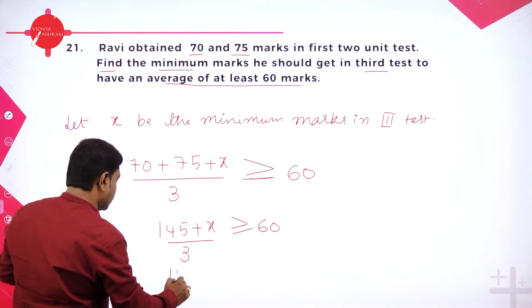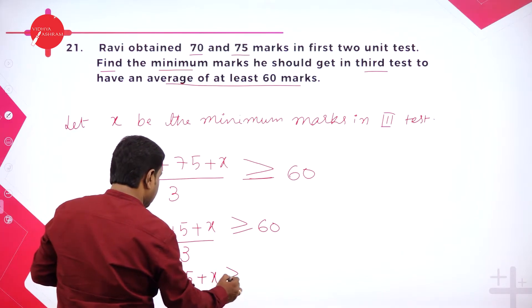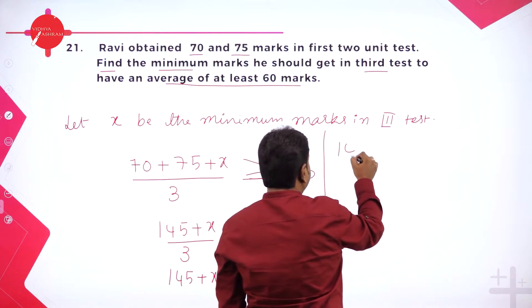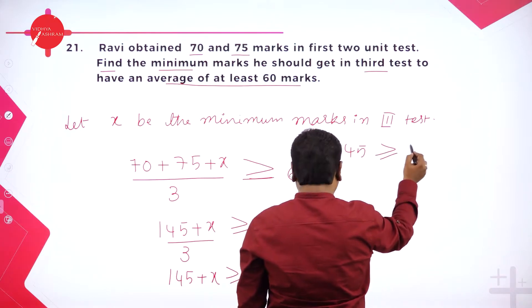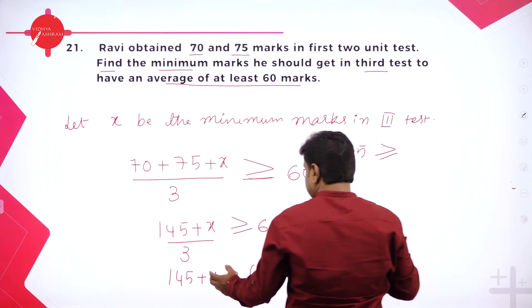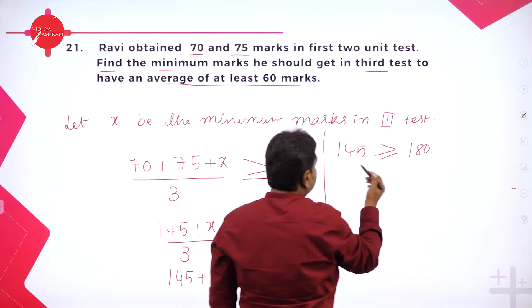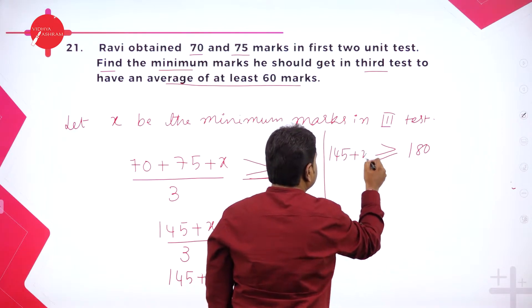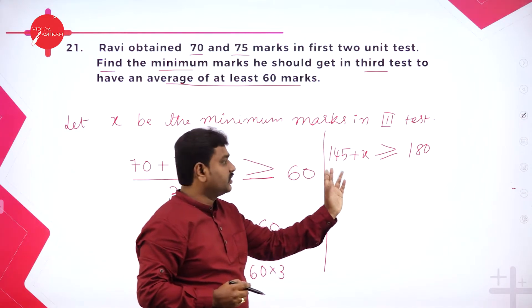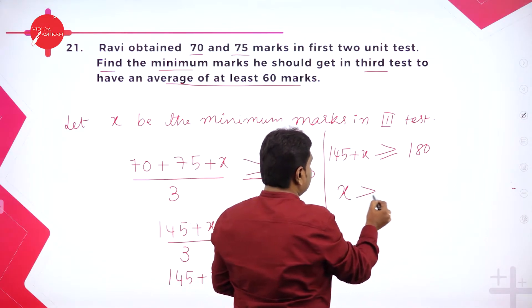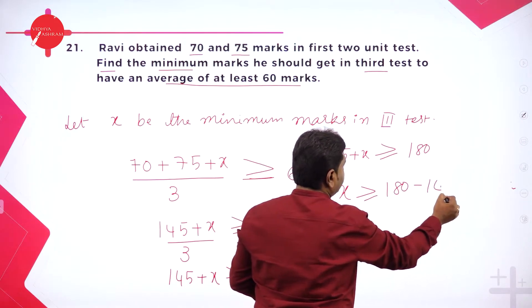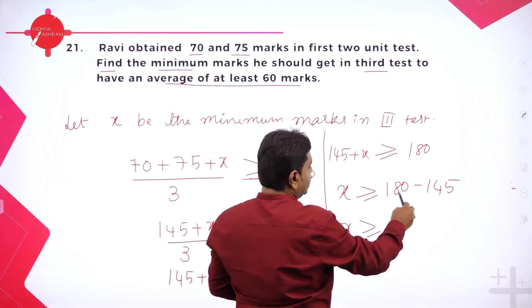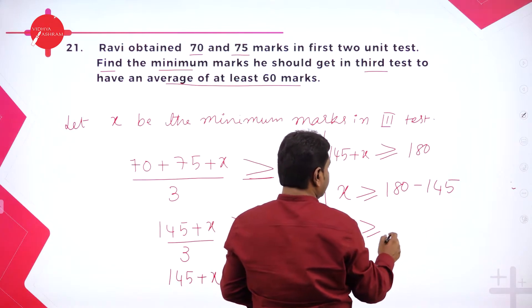Greater than or equal to 60. Transfer 60 to that side. So 145 plus x is greater than or equal to 60 into 3, which is 180. Rearranging: 145 plus x is greater than or equal to 180. Solve for x — transfer 145 to that side. So x is greater than or equal to 180 minus 145.